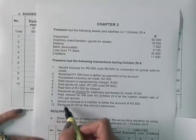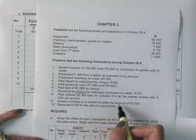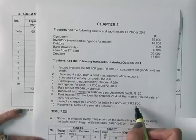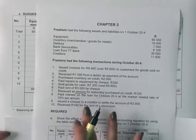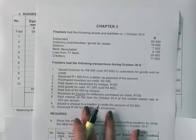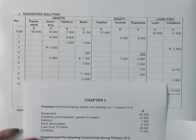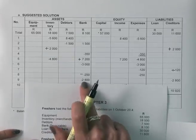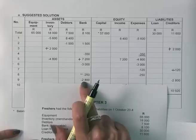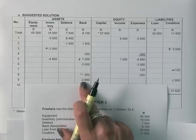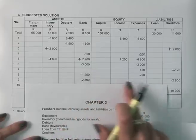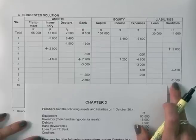Transaction nine: we issued a check to a creditor to settle the account of 2,800 Rand. Issuing a check comes out of the bank account, so under assets we decrease bank by 2,800 Rand. Because this settles a creditor, we also reduce creditors — the liability — by 2,800 Rand.